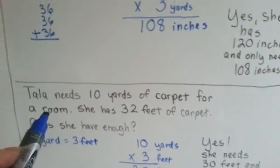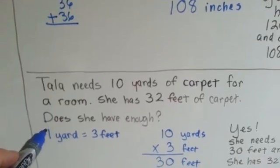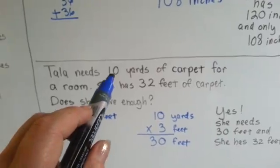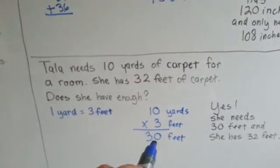Okay, Tala needs 10 yards of carpet for a room. She has 32 feet of carpet. Does she have enough? Well, one yard is three feet. If we multiply the 10 yards by the three feet in each yard, we get 30 feet.